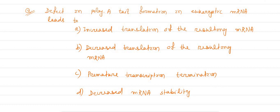Hello, here is the question. The question is, defect in poly-A tail formation in eukaryotic mRNA leads to - if polyadenylation or poly-A has not properly attached to the mRNA, what would happen?